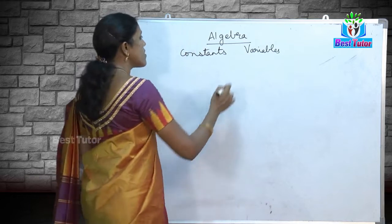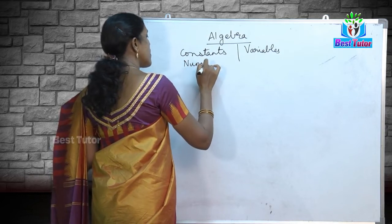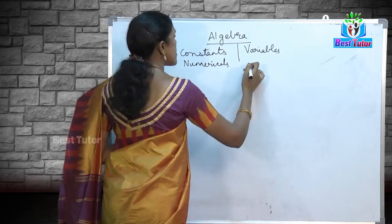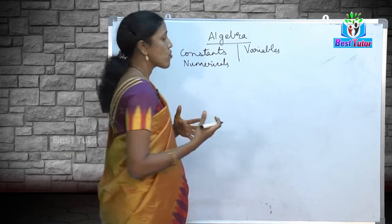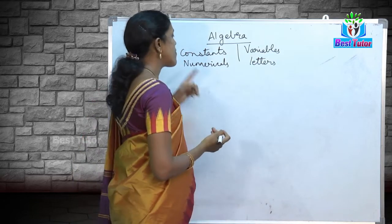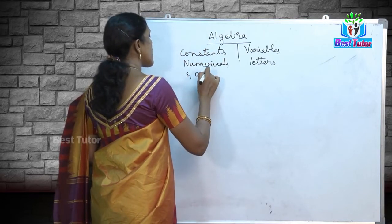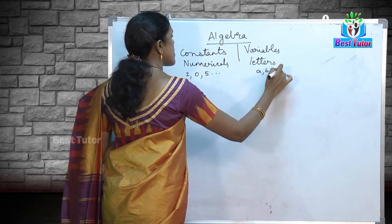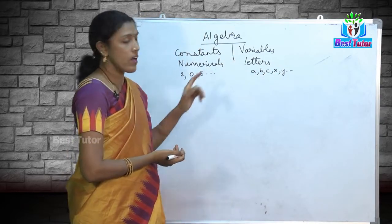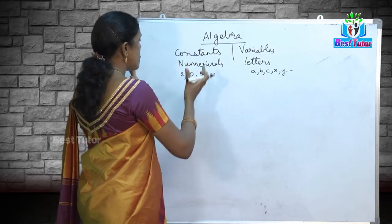Constants are nothing but numericals — their values do not change. Variables can be changing, so I represent them by letters. Constants are represented by numbers like 2, 0, 5, and so on. Variables are represented by English alphabet letters like a, b, c, x, y, and so on.